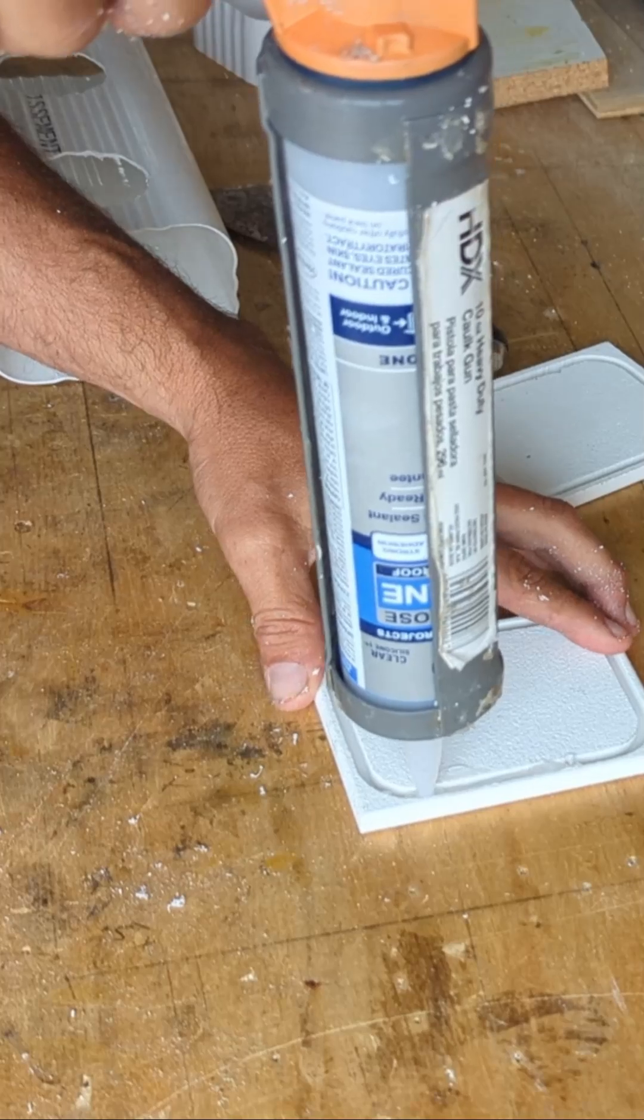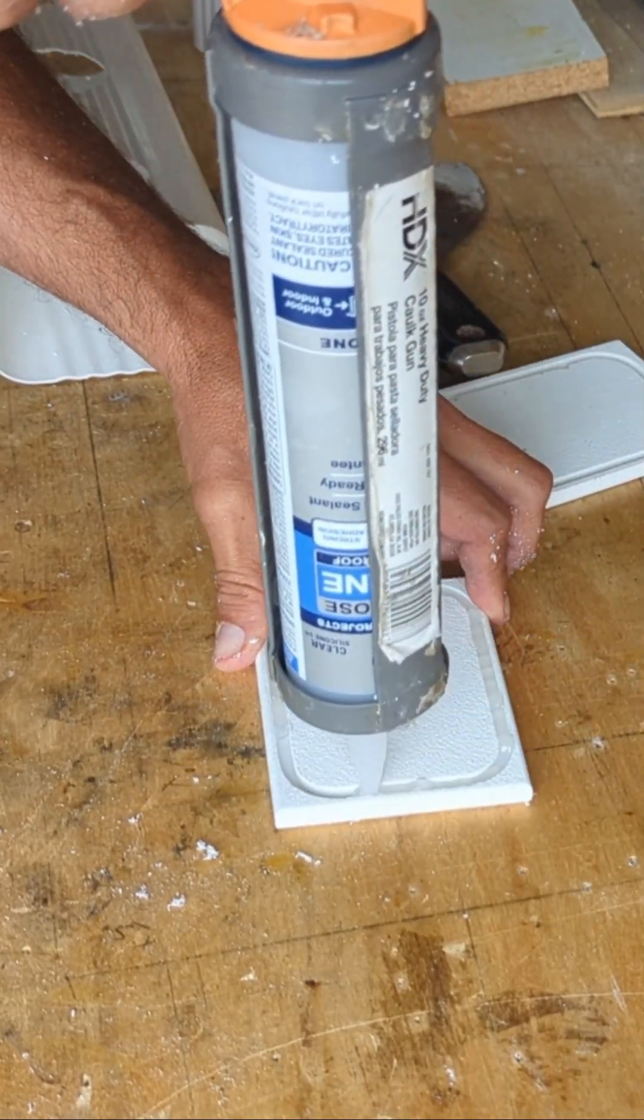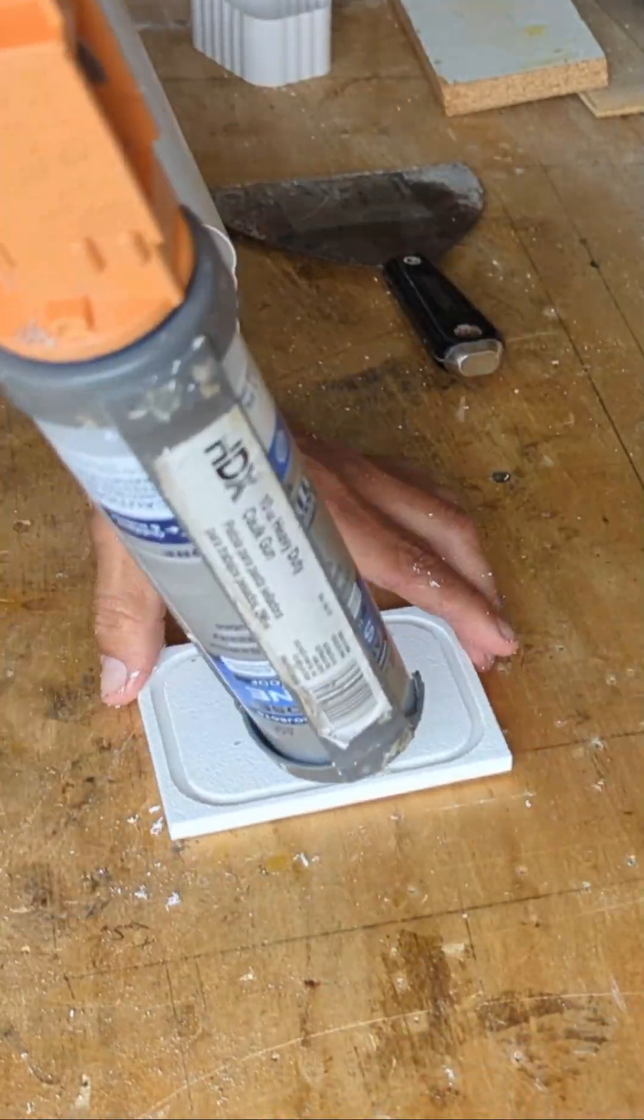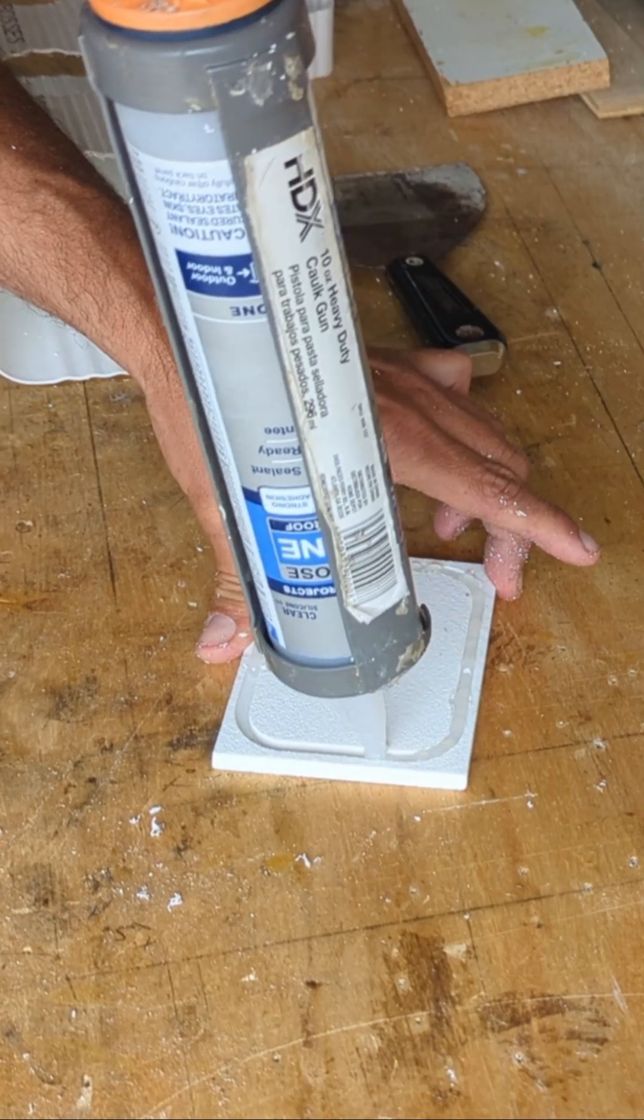Start by filling the groove in the end cap as evenly as you can with silicone 1 or silicone 2. The caulking gun fills the groove most effectively when held perpendicular to the end cap, in my experience.